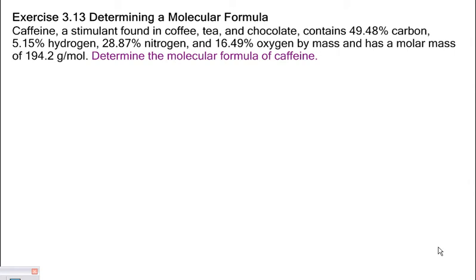In our previous problem, nitrogen wasn't given to us in grams. If it had been in percent, we would have simply subtracted the percentages we did have from 100 in order to find the percent of that compound that was nitrogen. So like any problem, I always start by highlighting what I'm given and what I'm asked to find. I'm given the percent of carbon, hydrogen, nitrogen, oxygen, and the molar mass of caffeine overall.